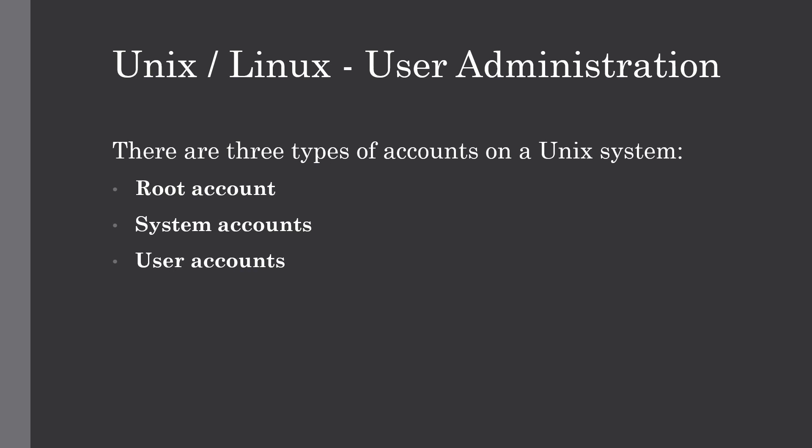The next one is the system account. System accounts are those needed for the operation of system-specific components, for example mail accounts and the SSHD account. These accounts are usually needed for some specific function on your system, and any modification to them could adversely affect the system. The last one is the user account, which provides interactive access to the Unix system for users and groups of users. General users are typically assigned to these accounts and usually have limited access to critical system files and directories, for which only the root account or super user will have access.